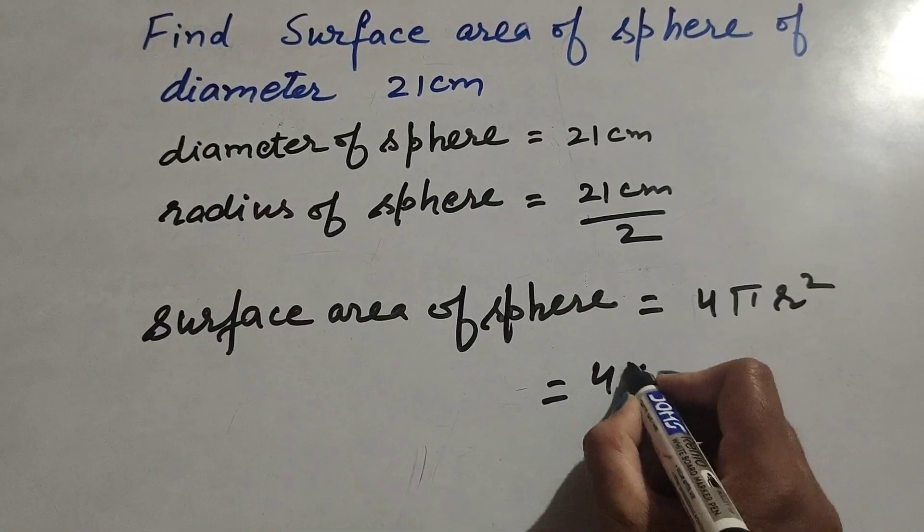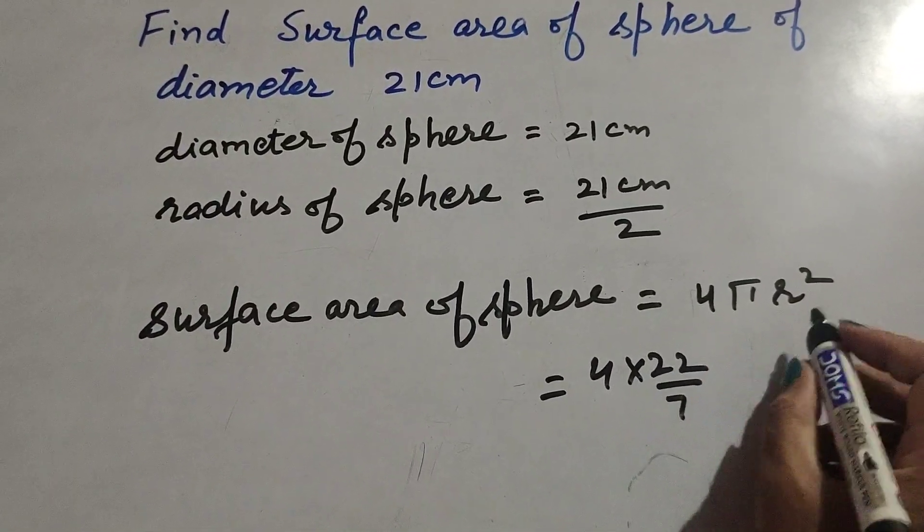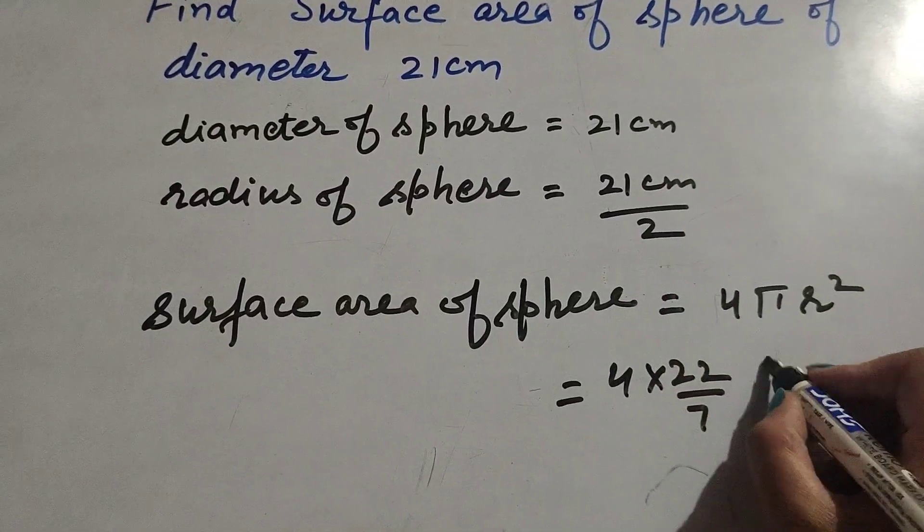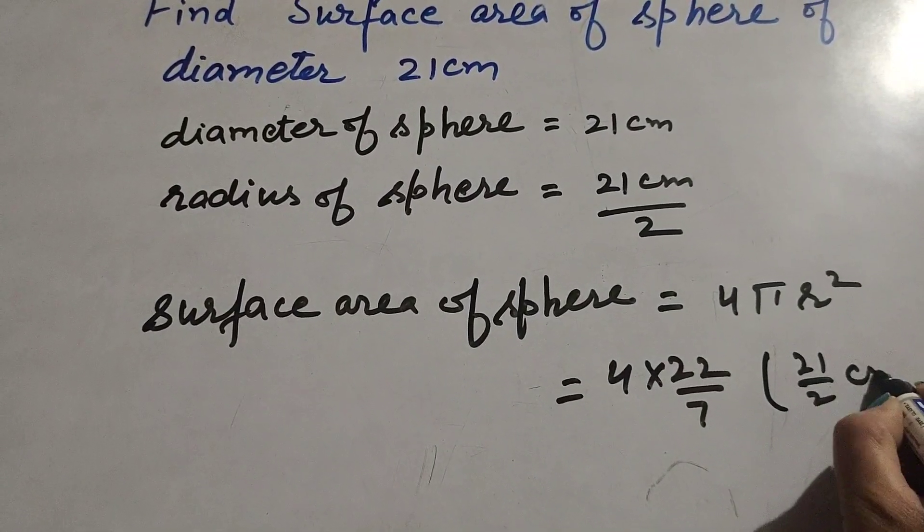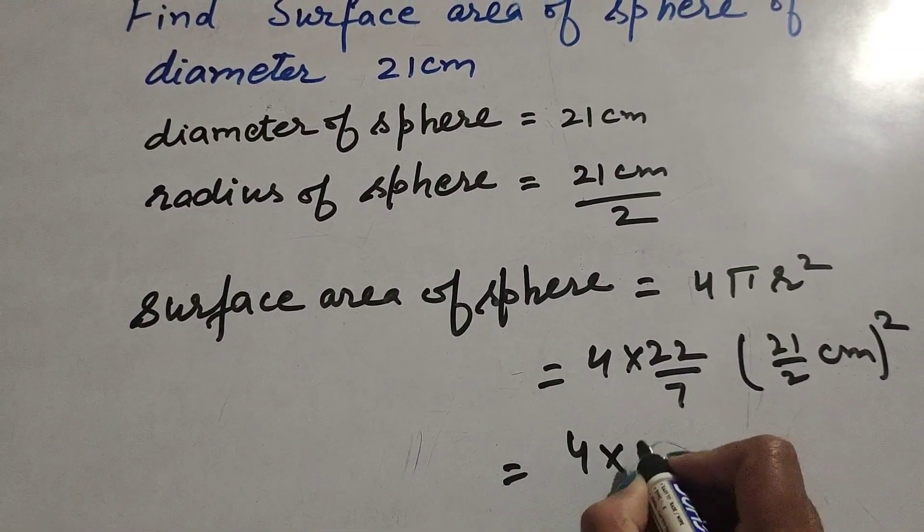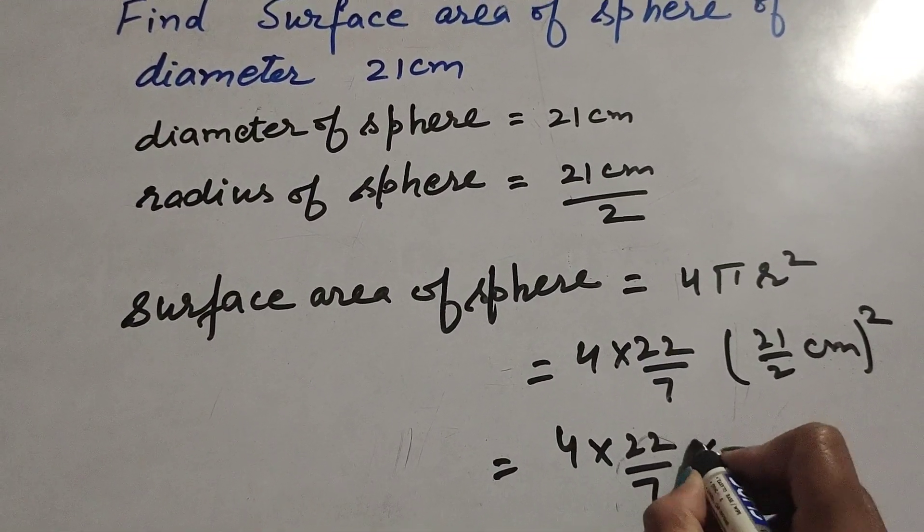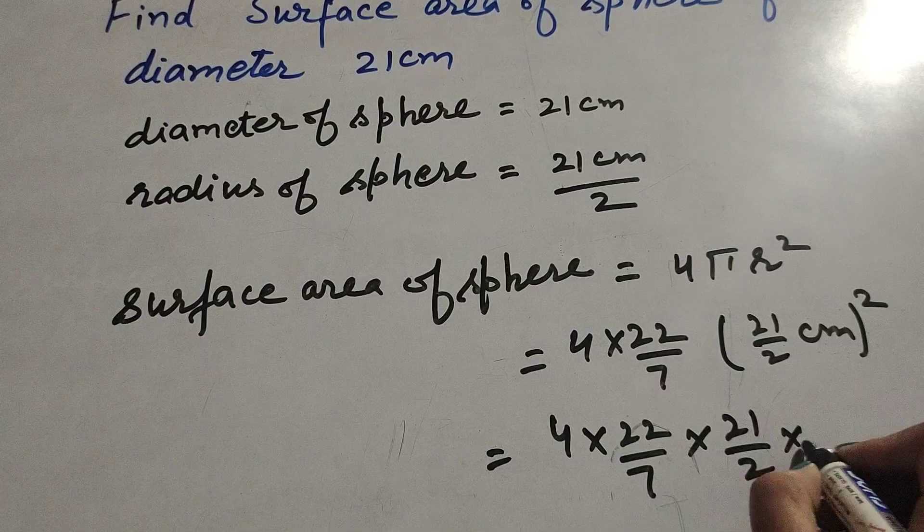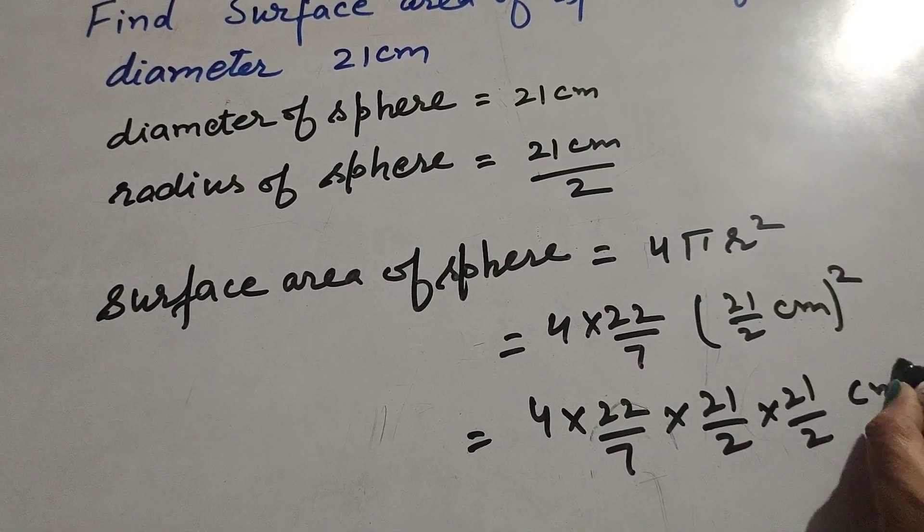4π, where π equals 22 over 7, and r is the radius which is 21 over 2 centimeters, squared. So it equals 4 times 22 over 7 times 21 over 2 times 21 over 2, in centimeters squared.